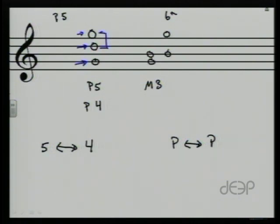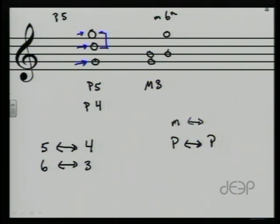So what did we learn? We can bank on this: a third will always invert to a sixth, and a sixth always inverts to a third and vice versa. And a major interval will always invert to a minor interval and vice versa. Any time we have a major interval it inverts to minor; any time we have minor it inverts to major.